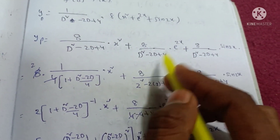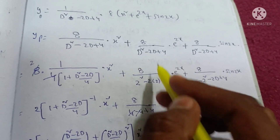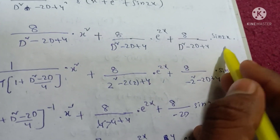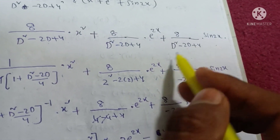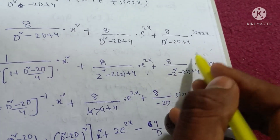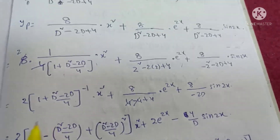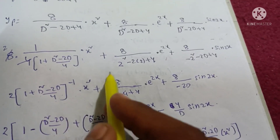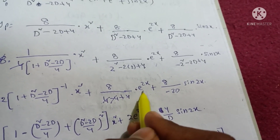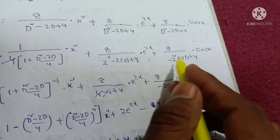For the e power 2x term, using the first method, substitute d equals a equals 2: denominator becomes 2 squared minus 2 into 2 plus 4, which is 4 minus 4 plus 4 equals 4. So that term gives e power 2x over 4. For sin 2x, using the second method, substitute d squared equals minus a squared equals minus 4: denominator becomes minus 4 minus 2d plus 4 equals minus 2d.